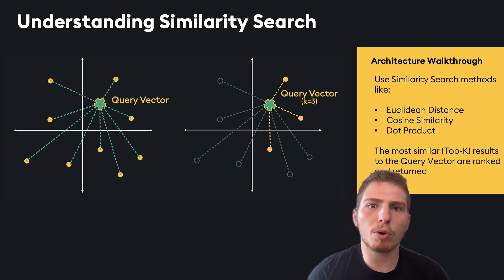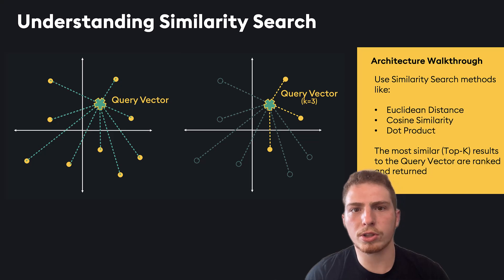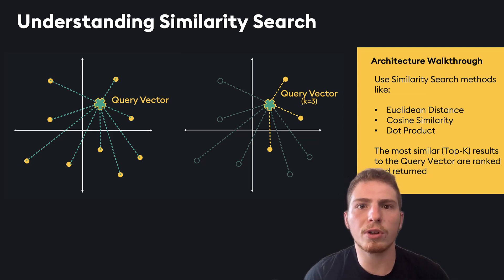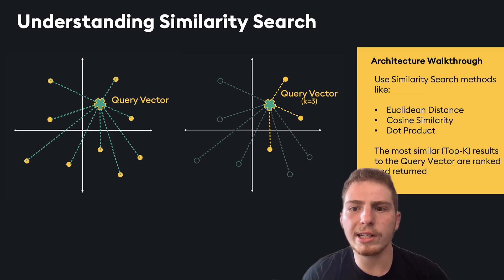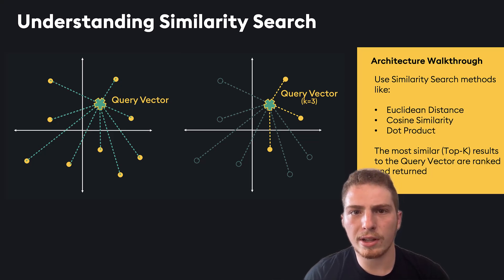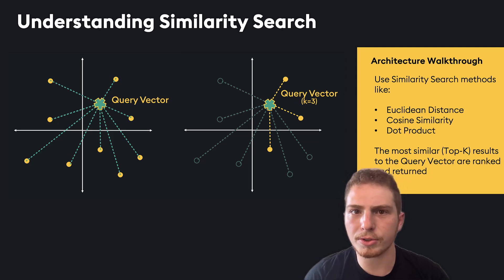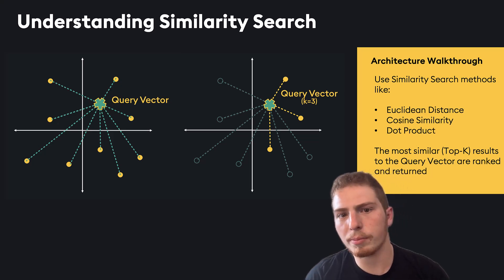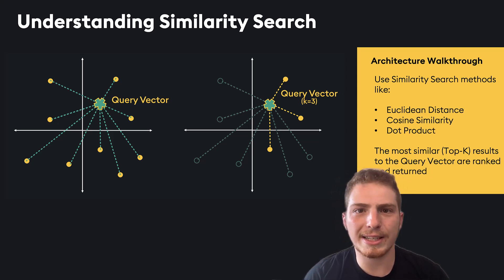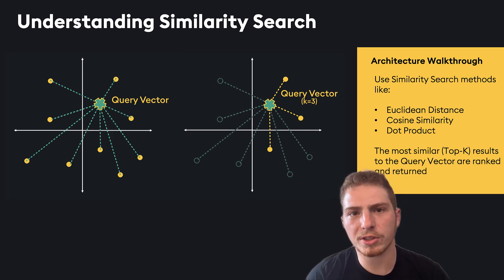For most production applications, especially retrieval augmented generation, you're likely using Euclidean distance and cosine similarity. These two similarity metrics will likely have very similar performance, but you should try both and see which one is most effective for your specific use case.